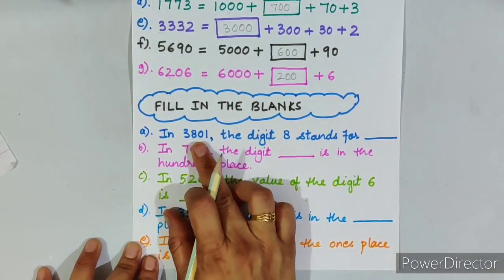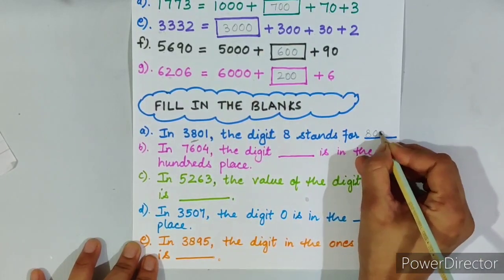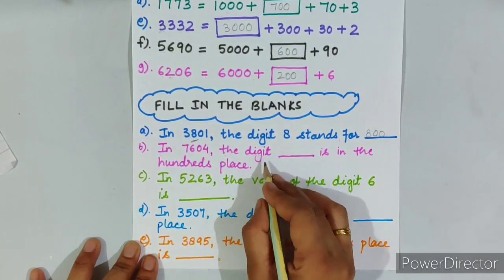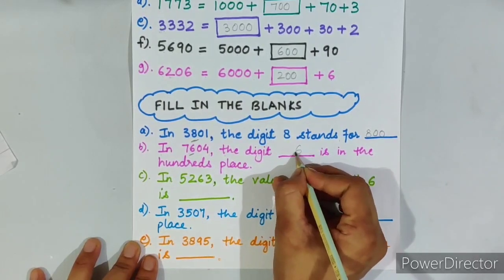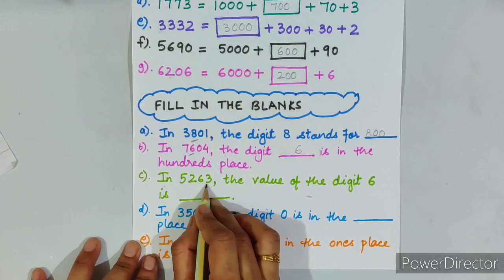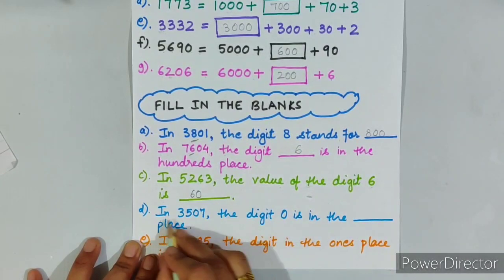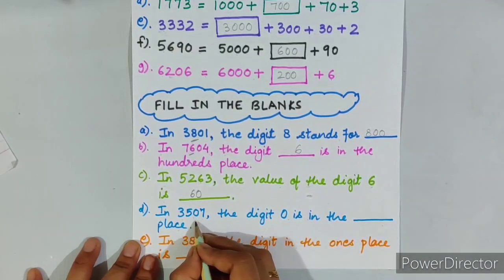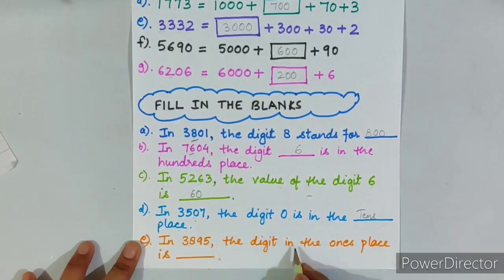Fill in the blanks. In 3,875, the digit 8 stands for 800. In 7,604 the digit 6 is in the 100's place. In 5,263 the value of the digit 6 is 60. In 3,507 the digit 0 is in the 10's place. In 3,895 the digit in the 1's place is 5.